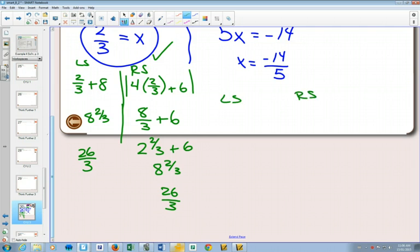Left side, right side. This one has the potential not to work more than the other one, because when I plug in negative 14 over 5 plus 8, it's possible that the left side could be a negative number, and that would be a problem.